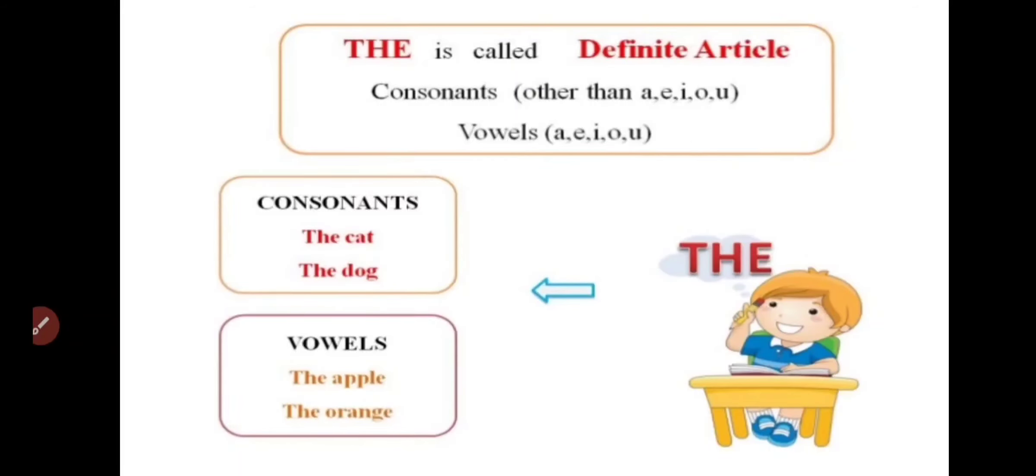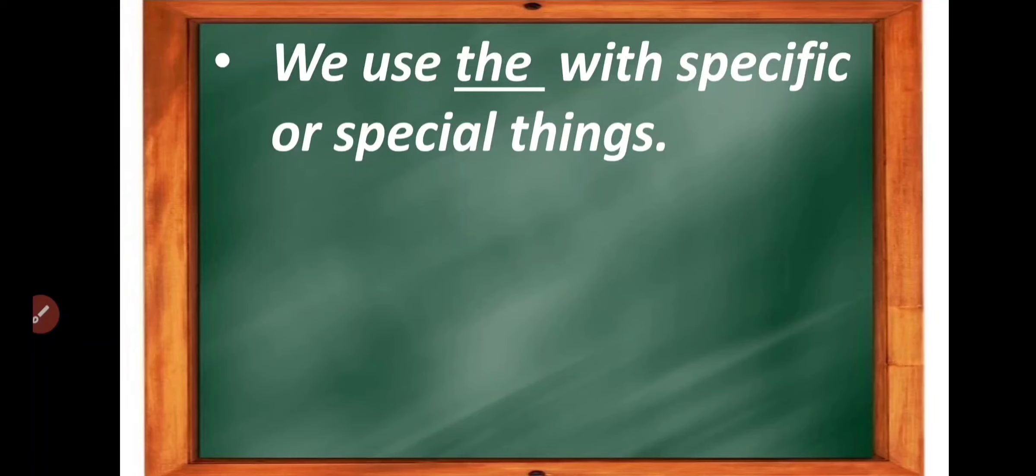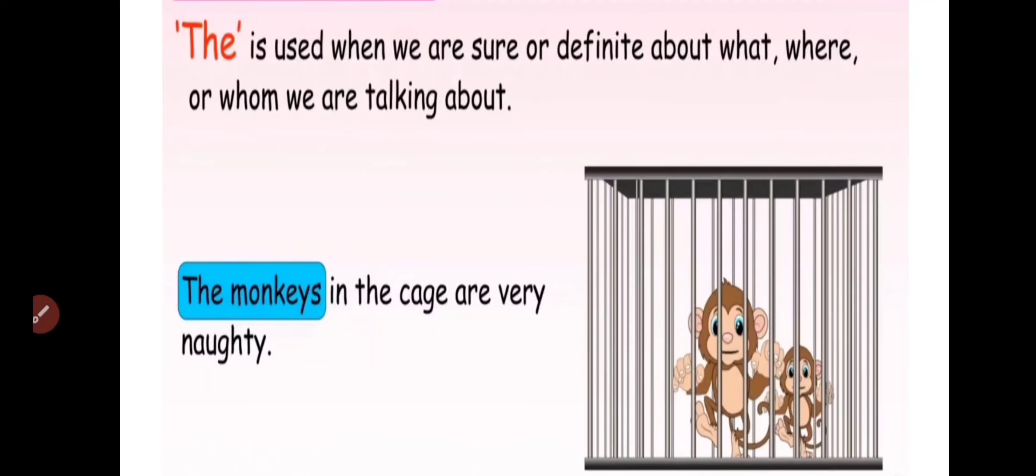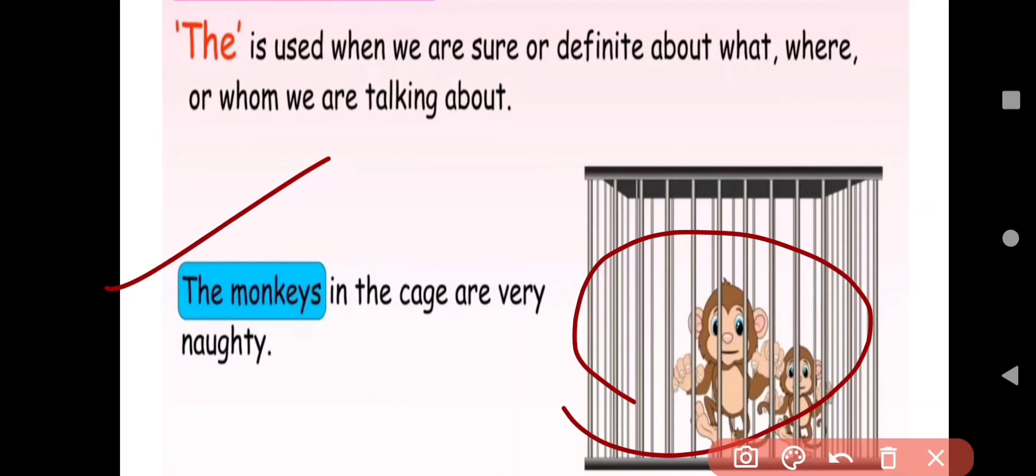Here, the is called definite article. We can use the with both sounds, means with vowel sound words and with consonant sound words. And we use the with specific or special things. Like here, the earth, the sun, the moon. These things are only where the is used when we are sure or definite about what, where, or whom we are talking about. Means when we talk about a particular or special thing.